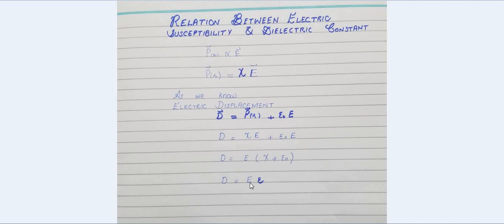This permittivity of the material is also called the dielectric constant, because we are trying to derive the relationship between electric susceptibility and dielectric constant. So when χ is added to ε₀ — the permittivity of free space — the result equals the permittivity of the material. Therefore, electric displacement D equals the applied electric field E multiplied by the permittivity of the material.